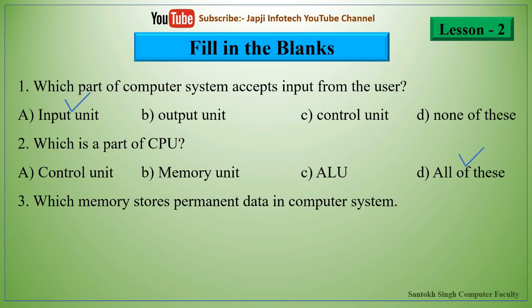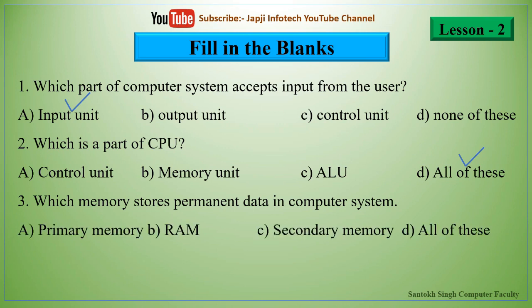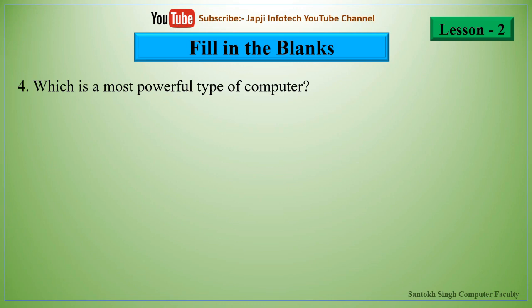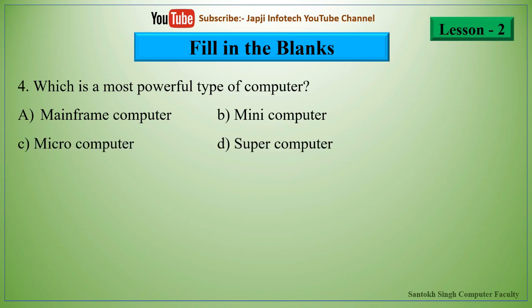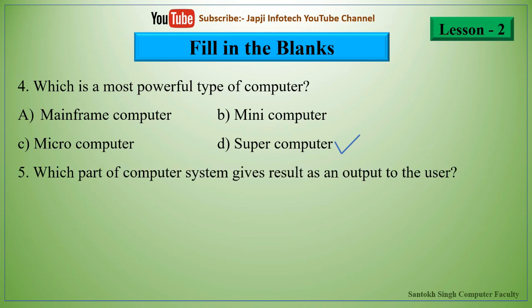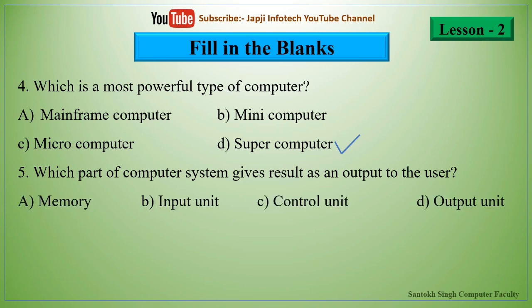The third one is: which memory stores permanent data in a computer system? The right answer is secondary memory. The fourth one is: which is the most powerful type of computer? The options are mainstream computer, mini computer, micro computer, or supercomputer. The right answer is supercomputer. The fifth one is: which part of the computer system gives results as output to the user? The right answer is the output unit.